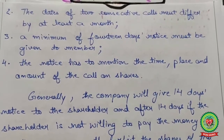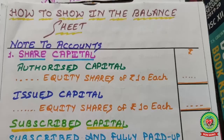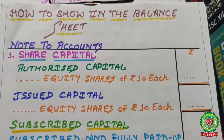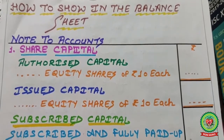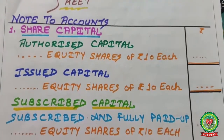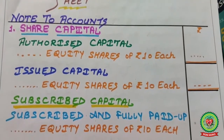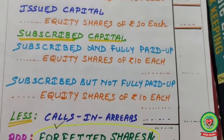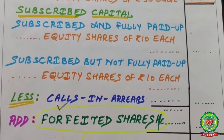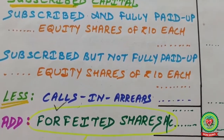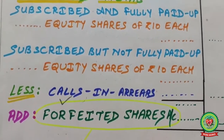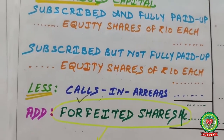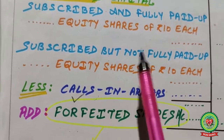How to show the forfeited amount in the balance sheet: in the notes to accounts, under share capital — subscribed capital — you show subscribed but not fully paid.